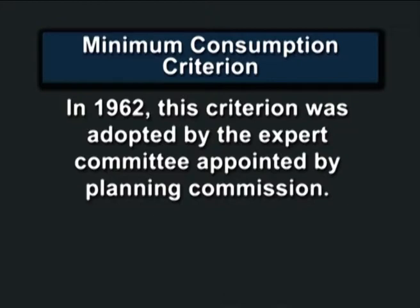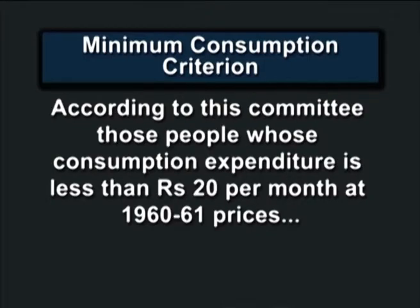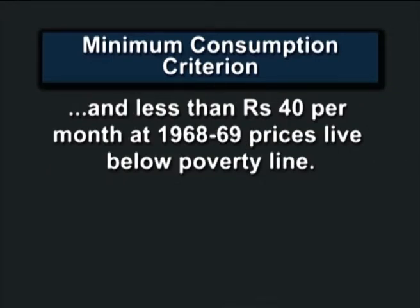Another criteria is the minimum consumption criteria. In 1962, this criteria was adopted by the expert committee appointed by the Planning Commission. According to this committee, those people whose consumption expenditure is less than rupees 20 per month at 1960-61 prices and less than rupees 40 per month at 1968-69 prices live below the poverty line. In 2009-10, the Planning Commission suggested raising the poverty line: a family of five with an income less than rupees 3000 a month in urban areas (rupees 600 per person per month) and rupees 2250 in rural areas (rupees 450 per person per month) should be considered poor.